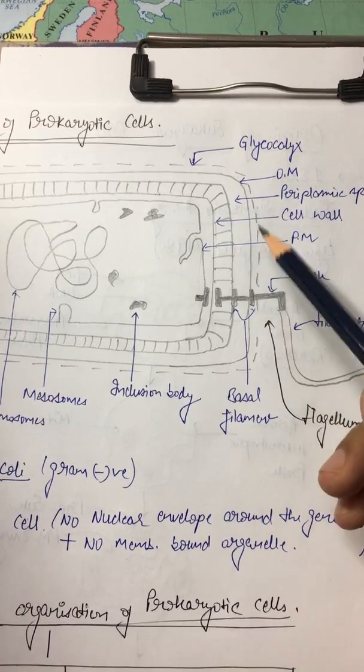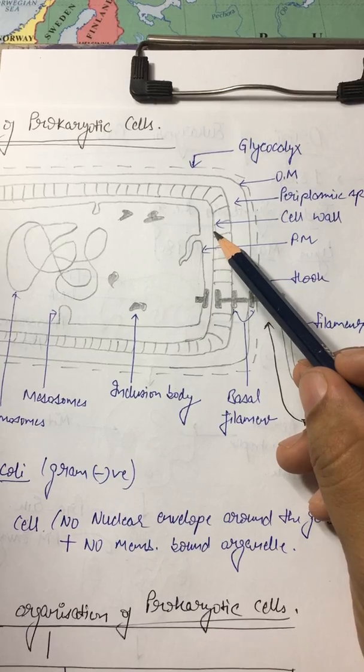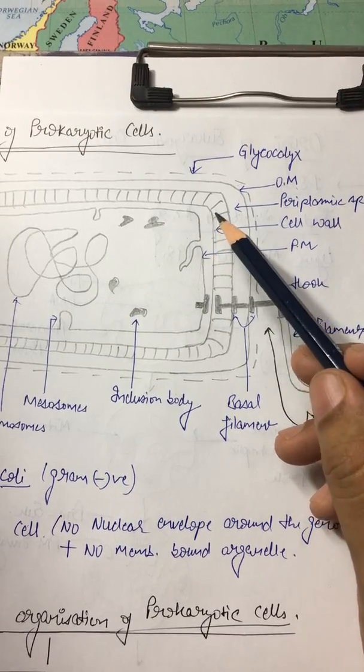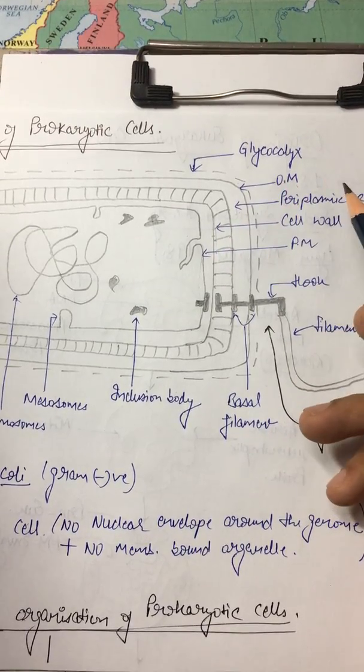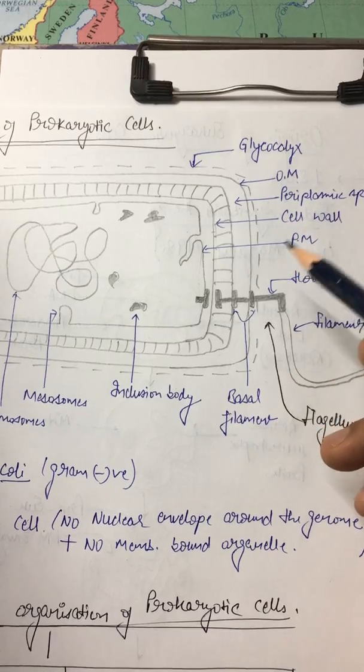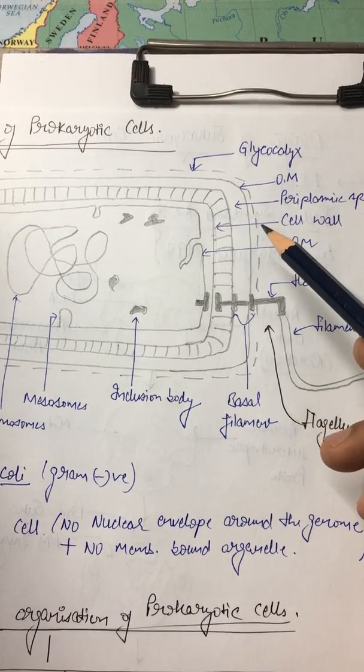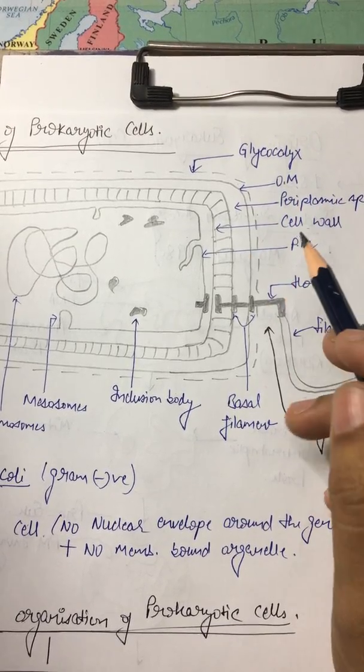Then we have cell wall. It is composed of peptidoglycan complex structure, contains NAG, NAM, and teichoic acid. Cell shape determination and protection are its main functions.